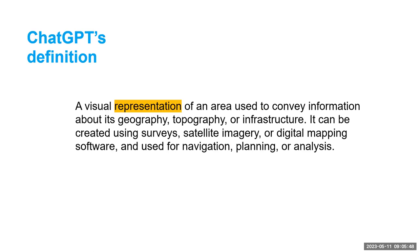Merriam-Webster says it's a diagram or other visual representation that shows the relative position of the parts of something. And then I consulted my recent favorite tool, ChatGPT. When I asked what a map is, it said it's a visual representation of an area used to convey information about its geography, topography, or infrastructure — created using surveys, satellite imagery, or digital mapping software, and used for navigation, planning, or analysis. A quite thorough definition. All definitions use the term 'representation' — keep that in mind, I'll come back to it.